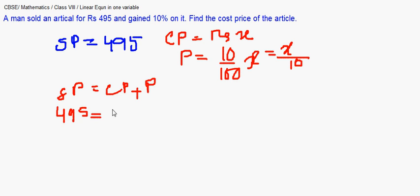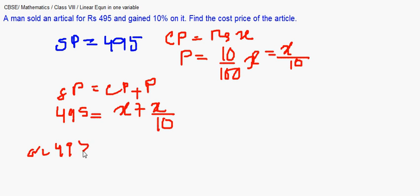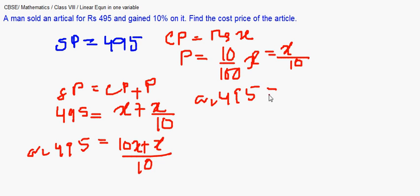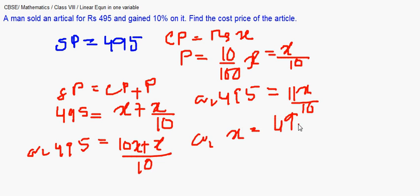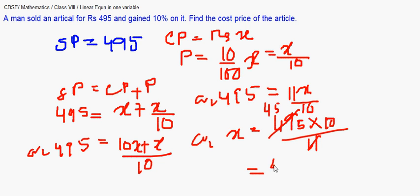We know that selling price equals cost price plus profit. Substituting: 495 = x + x/10, which gives 495 = 11x/10. So x = 495 × 10/11. Cancelling gives x = 450. So the cost price is rupees 450.